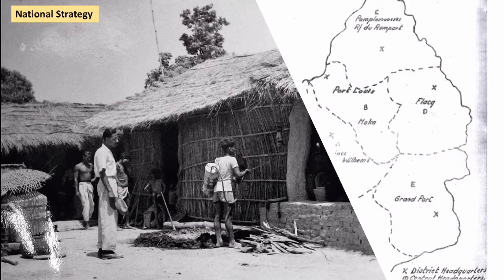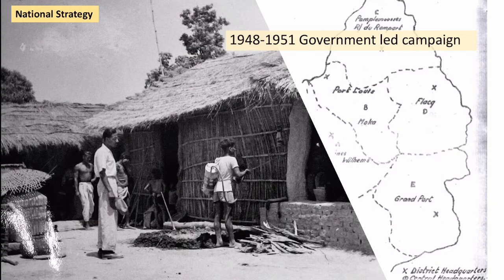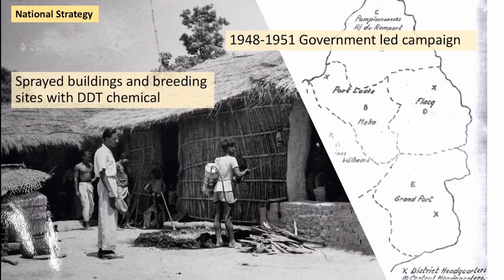Because they were having this severe problem with a vector-borne disease causing lots of issues for the population, they decided to have a national campaign — a top-down approach — launched in 1948 and running until 1951. As we can see in the picture here, they sprayed buildings and breeding sites with the chemical DDT. The country was separated into different regions, with a different person responsible for organising the spraying in each section. This was when Britain was a colonial power in Mauritius, so a member of the army was involved in overseeing each area.